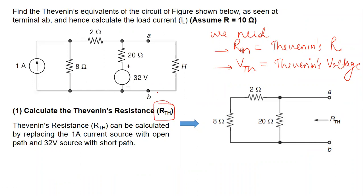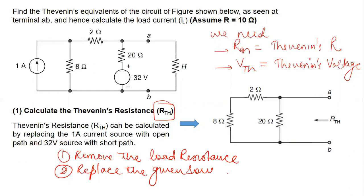To calculate RTH, we have two things to do with the circuit. One is to remove the load resistance. The second is to replace the given sources with their resistances. By applying these two steps on this particular network, we have this circuit here.